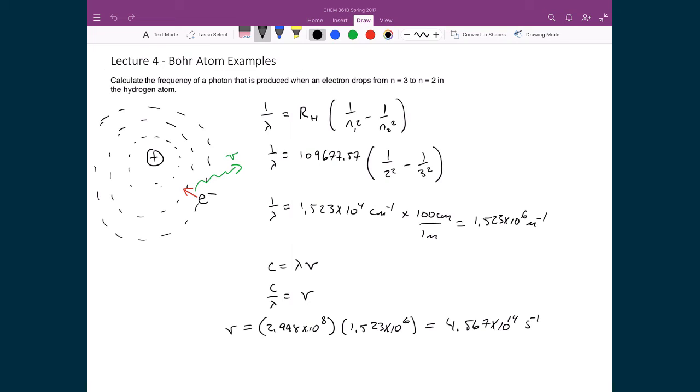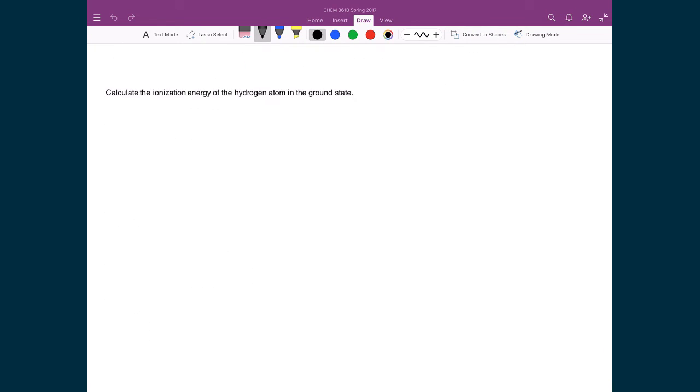But another interesting thing that we can actually learn from this physical model of the atom is we can start doing things like, well, how much energy does it cost to actually pull the electron outside of the hydrogen atom? Or in other words, what is the ionization energy of the hydrogen atom in the ground state?